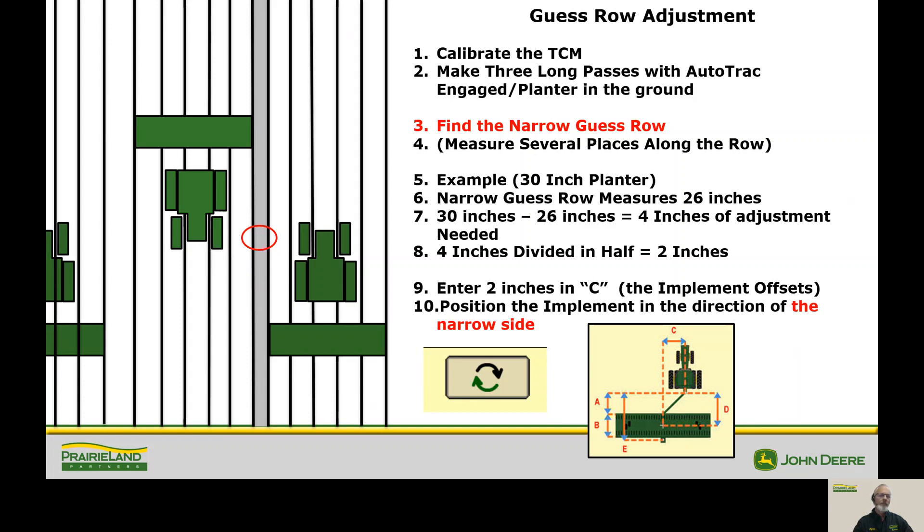So now we stop, we get out, we measure. In this particular case, we want 30 inch guess rows, but it measures 26. Well, we have four inches of adjustment that's needed. So the idea that I want you to do is take that four inches and divide it in half, because we're going to make half of the measurement change or the adjustment on one pass and half on the other. So the number we're going to enter in is two.